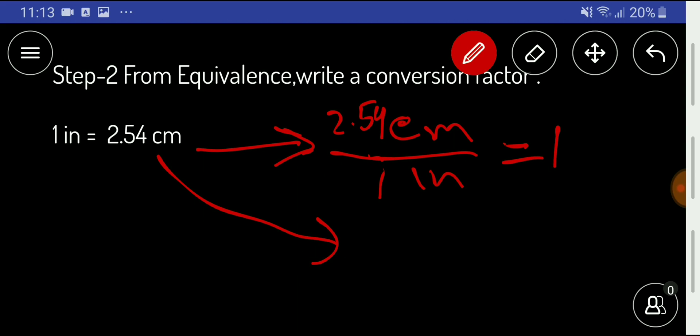We can take inches as the numerator and centimeters as the denominator, which will be 1 inch over 2.54 centimeters. From this equivalence we are getting two factors.